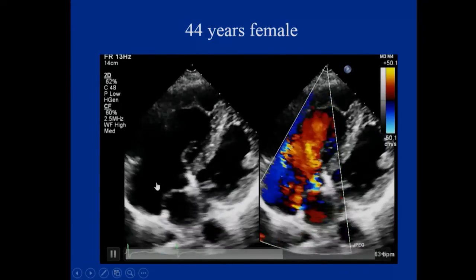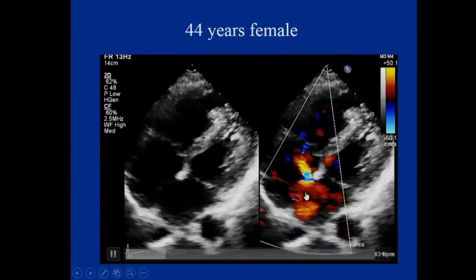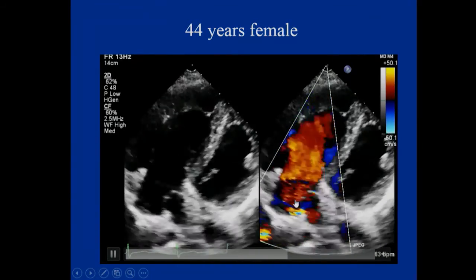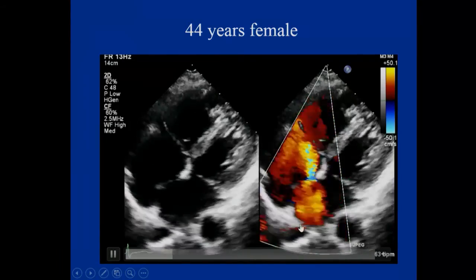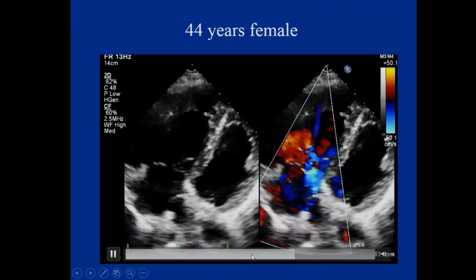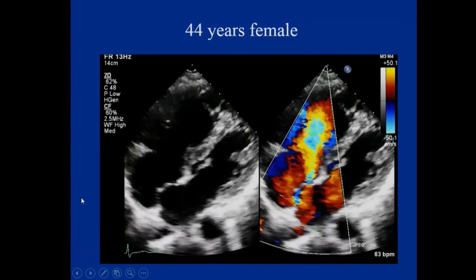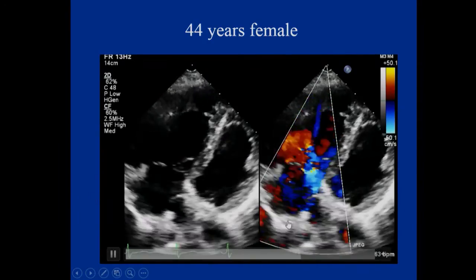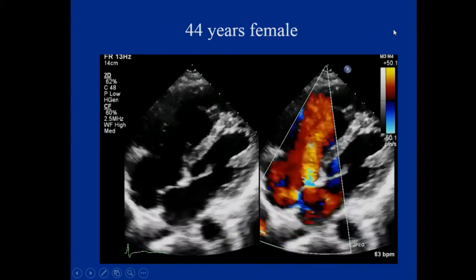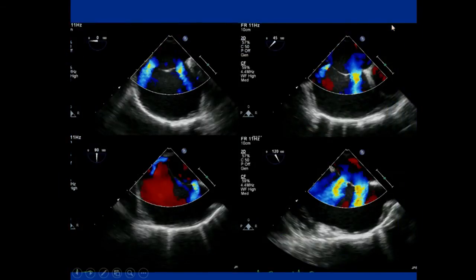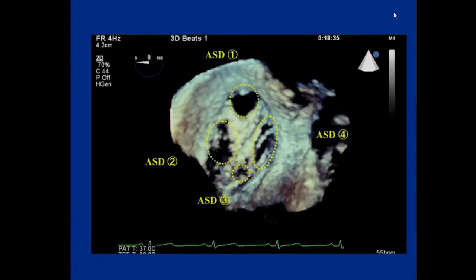In complicated cases, septal aneurysms with more than two shunts can be visualized by transesophageal echocardiography, and aneurysmal formation is also available. However, anatomical evaluation is still very difficult. On 2D TEE it appeared to show two or possibly three defects; even with color Doppler two-dimensional echocardiography there is difficulty visualizing multiple defects accurately.